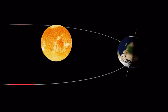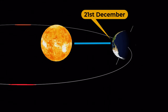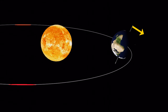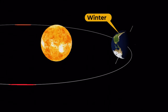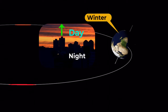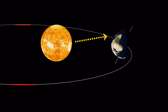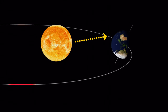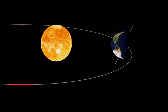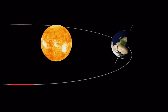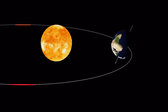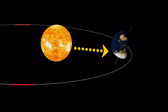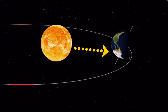Finally, as the Earth reaches its closest point to the Sun, the Northern Hemisphere is tilted away from the Sun, resulting in the winter season. This is the time when the days are the shortest and the nights are the longest, and the Northern Hemisphere receives the minimum amount of light. At the same time, the Southern Hemisphere is tilted towards the Sun, resulting in the summer season, receiving the maximum amount of light.